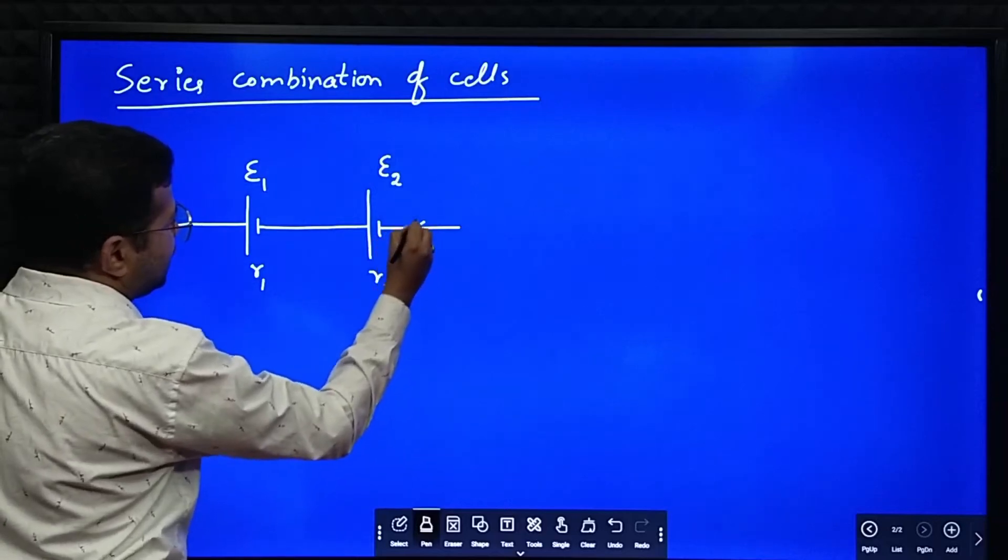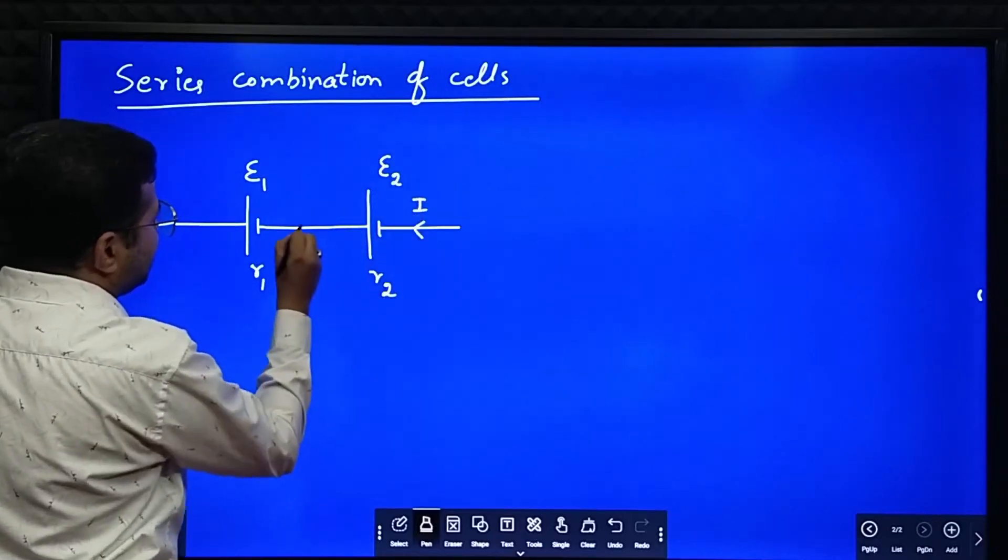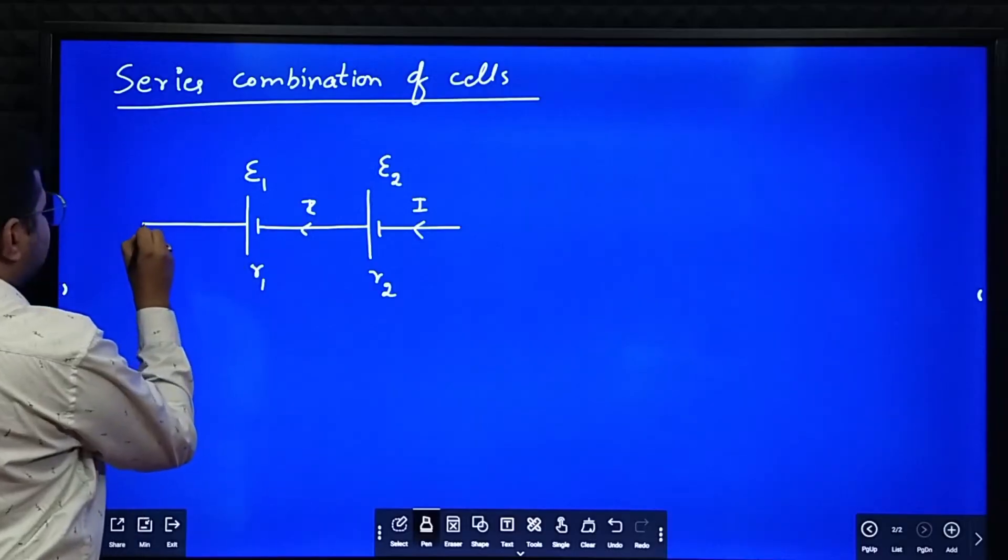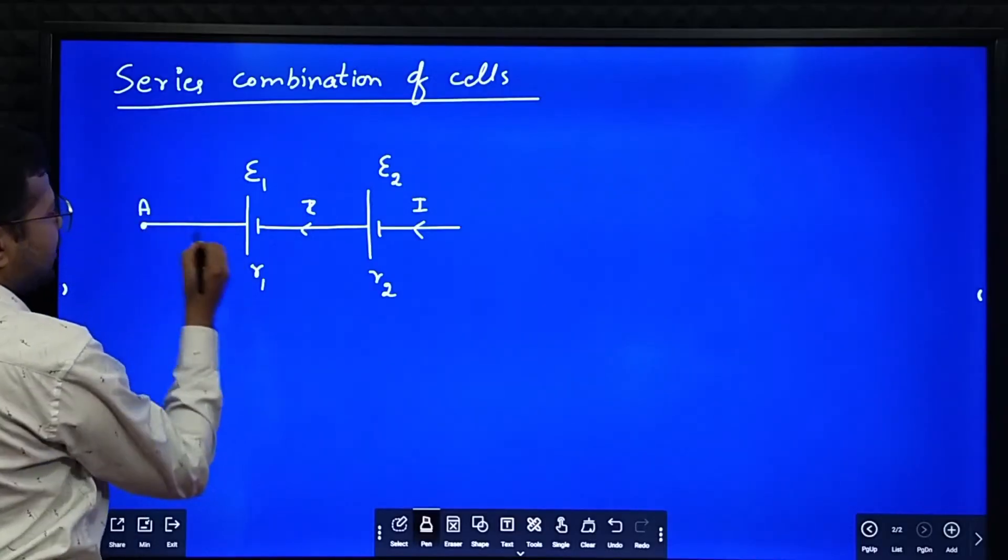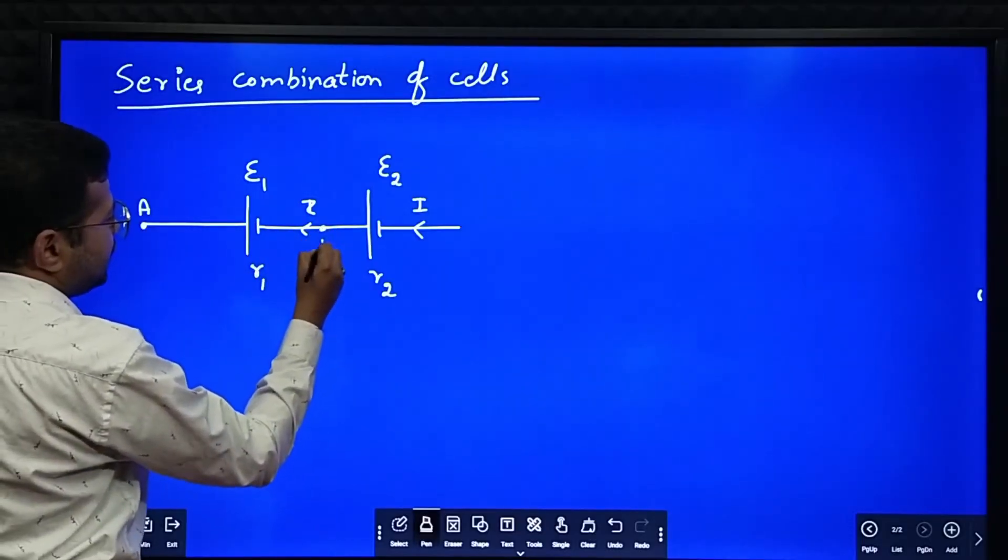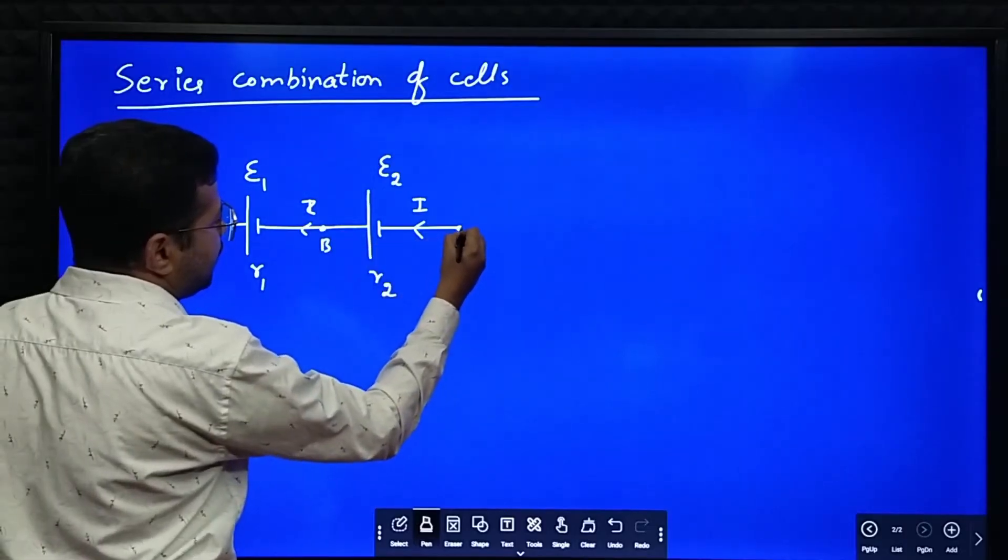Some current is flowing, I is the current which is flowing. I'll name some points here, say this point is A, this point is B and this point let it be C.